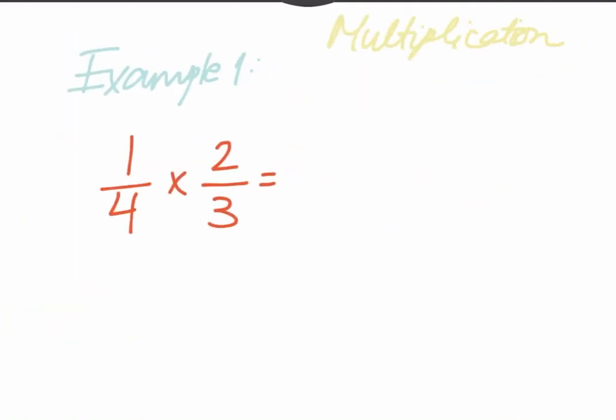So the first example says 1 divided by 4, multiplied by 2 divided by 3. It's very simple when it comes to multiplications with fractions, and it's a very easy method.